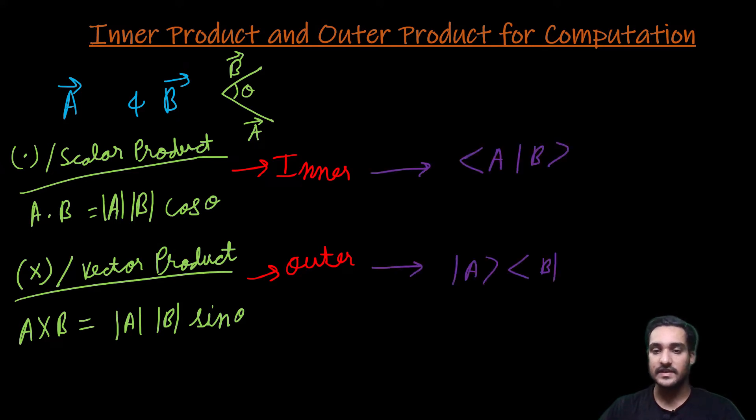It is represented by this form. That is the form of a bracket notation. Here, this notation is called inner product and this one is called outer product.